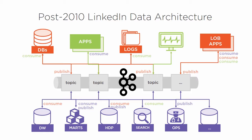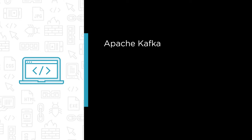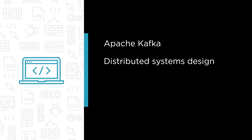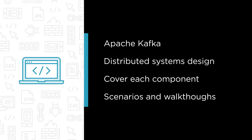In this course you will get a thorough understanding of Apache Kafka's architecture and how it has adopted proven distributed systems design principles that enable it to scale and perform reliably. We will break down this architecture into individual components and cover each in great detail. We will demonstrate the components in action with common scenarios and walkthroughs of how Apache Kafka solutions can be developed in Java.